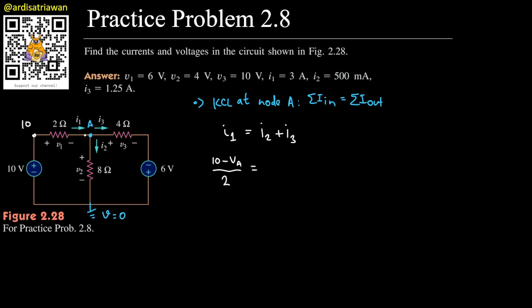On the right-hand side we will have i2. i2 is the difference between the voltage here and here, divided by the resistance between them, so we will have (Va - 0) divided by 8.